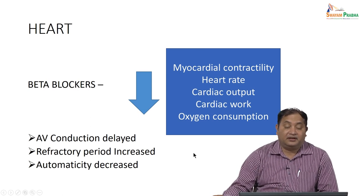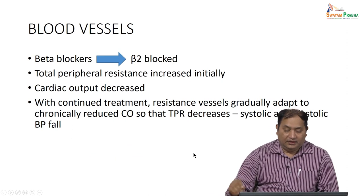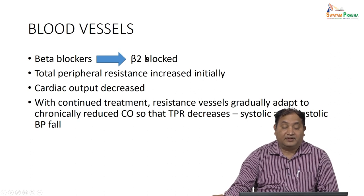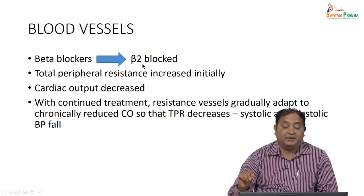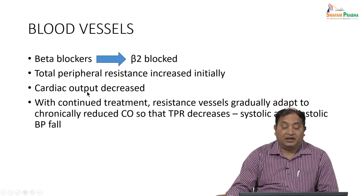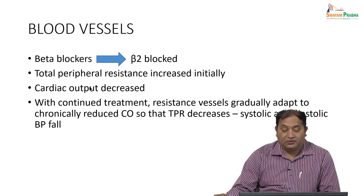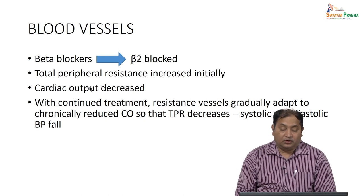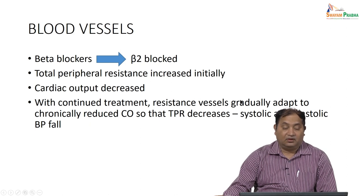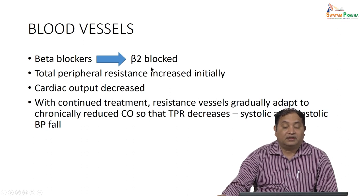Beta blockers can be used in several heart disease conditions. Regarding the effect on blood vessels: beta-2 receptors are mostly localized in blood vessels; blocking beta-2 receptors — which mediate vasodilation — initially increases peripheral resistance. Cardiac output then decreases, and with continued treatment, resistant vessels gradually adapt, reducing cardiac output and total peripheral resistance. This results in improved systolic and diastolic blood pressure. Through this effect on periphery via beta-2 receptors, beta blockers can be used therapeutically.